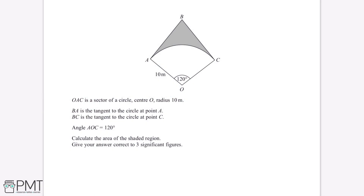OAC is a sector of a circle, centre O, radius 10 metres. BA is the tangent to the circle at point A, and BC is the tangent to the circle at point C. Angle AOC equals 120 degrees. Calculate the area of the shaded region, giving your answer correct to three significant figures.